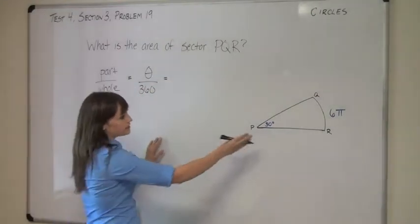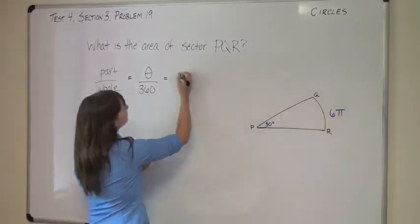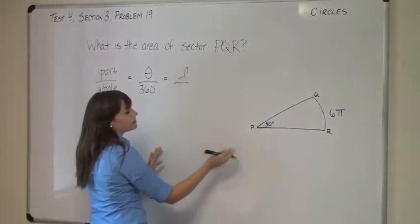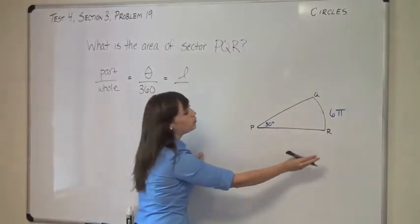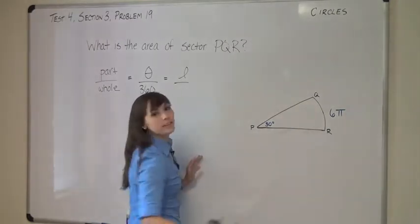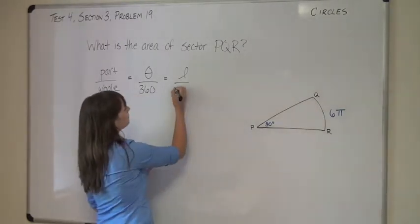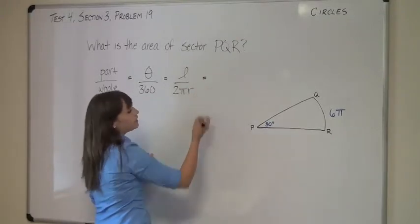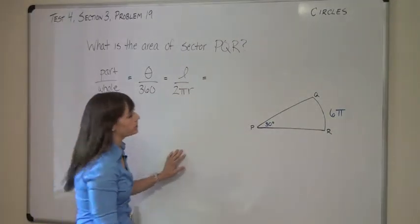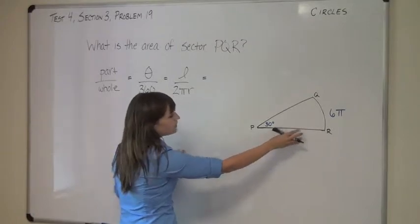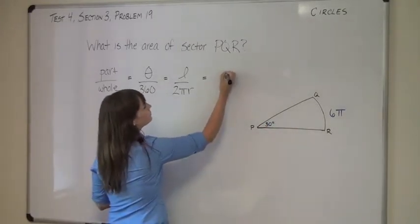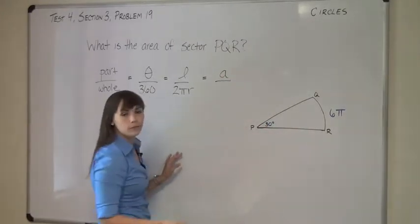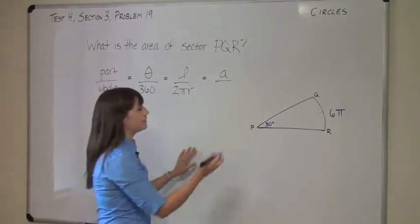The next measurement is the sector's arc length. If the sector's arc length is the part, what is the whole for the entire circle? That's just its circumference, 2πr. And then the third measurement we're going to do is the sector's area. If the sector's area is the part, what is the whole for the entire circle? Just the circle's area, πr².